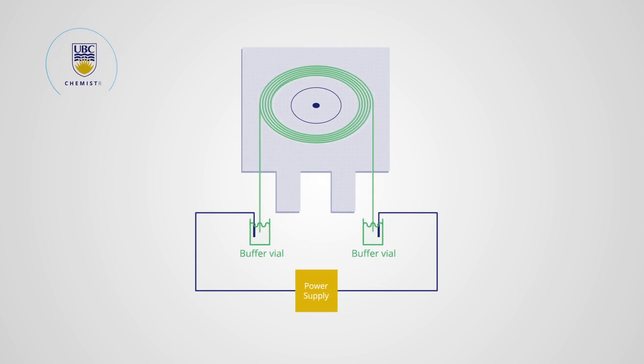the anode end of the capillary is dipped into the sample vial and a small plug of sample solution is forced in using pressure difference. The difference in pressure is established through the elevation of the anode end of the capillary, or through the pressurization of the sample vial using a pump.